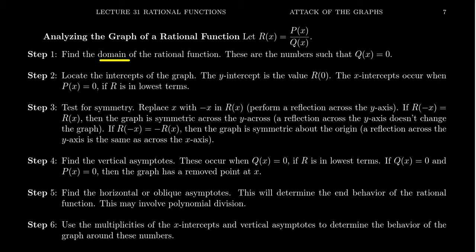The first thing I would consider is the domain of the function. The domain is determined by what makes the denominator go to zero. The denominator, which is a polynomial, you set it equal to zero and solve it. Any number that makes the denominator go to zero, we throw that out of the domain. We'll come back to that in just a second.